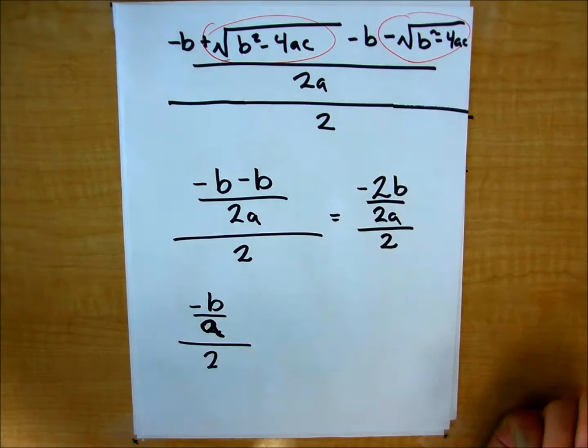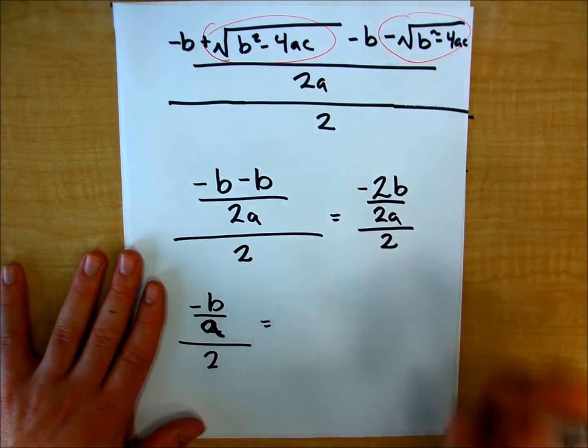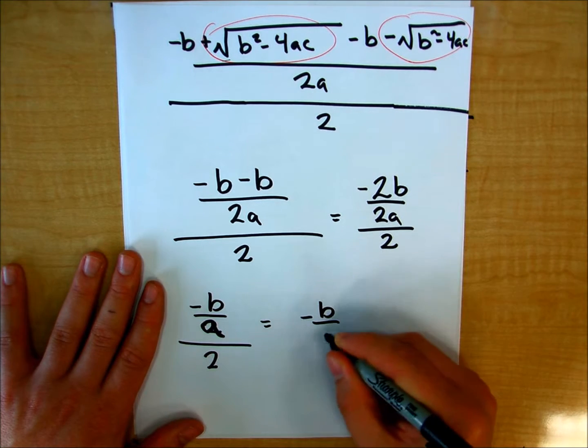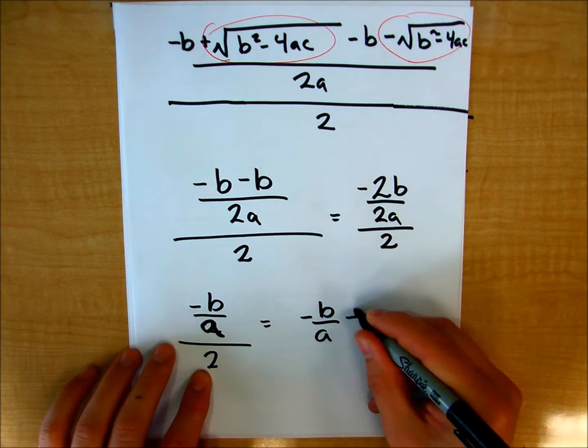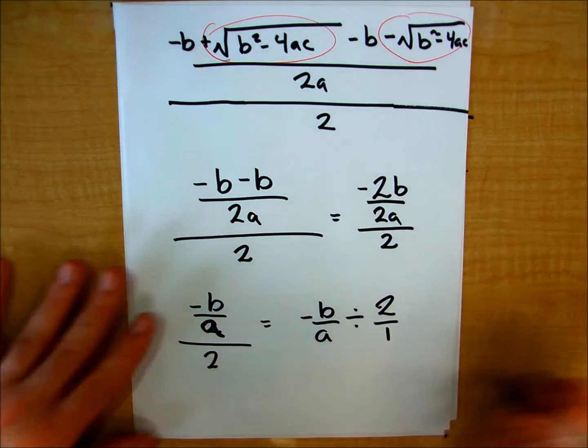And division, sometimes when I do these problems, I like to think about it in a slightly different way. I'll just put negative b over a divided by 2 over 1.